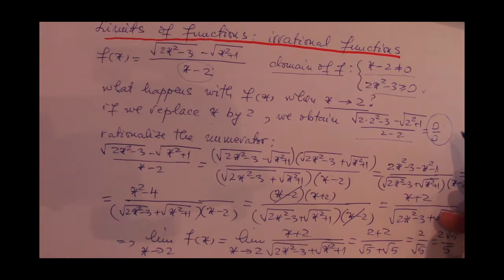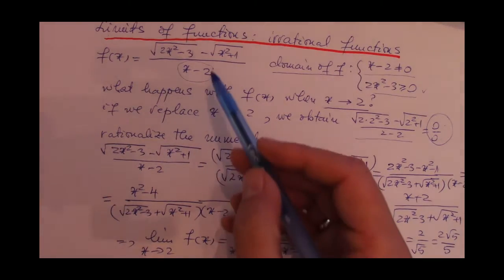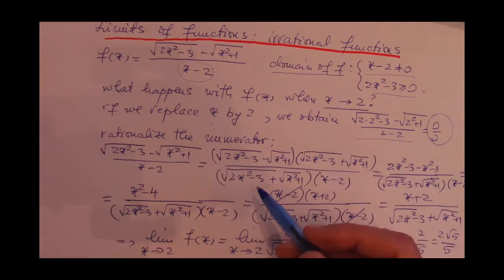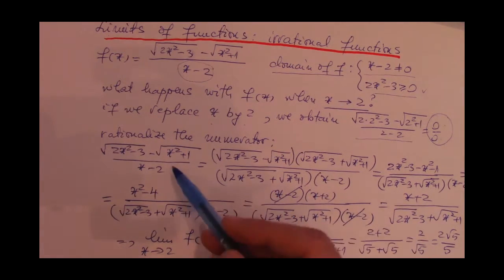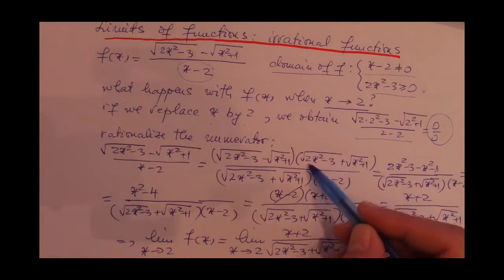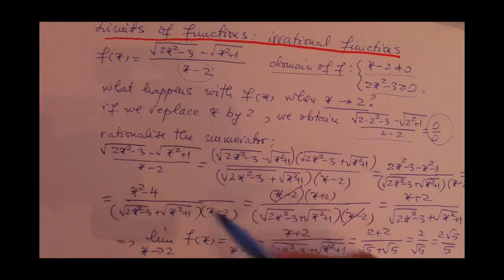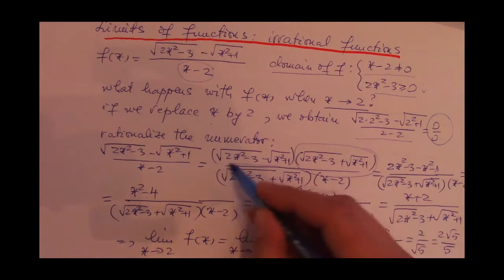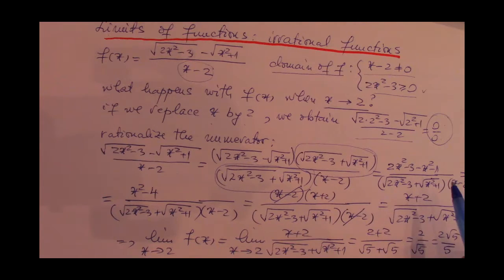Now because of the fact that the numerator of this fraction is an irrational expression, the way we approach this is by actually amplifying this fraction, this original fraction of ours, with this expression. So we multiply both the numerator and the denominator with the same expression, which is the conjugate of the original numerator of our fraction.